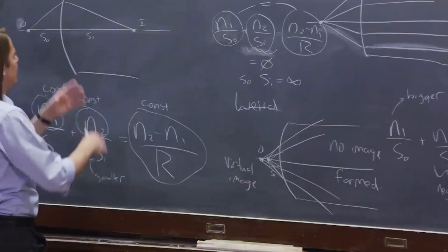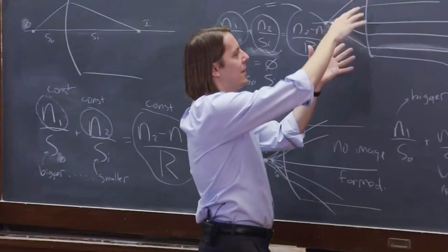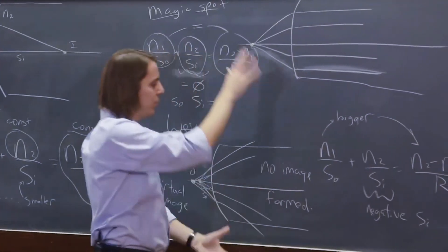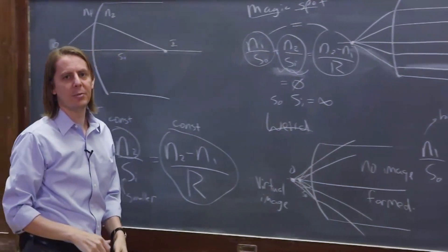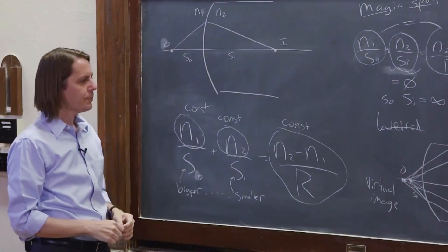So that's kind of three cases. When it's way out, you get a real image, you hit this magic point, and the rays focus parallel, and when you get really close, they just diverge, and you don't get an image at all. You just get a virtual image.